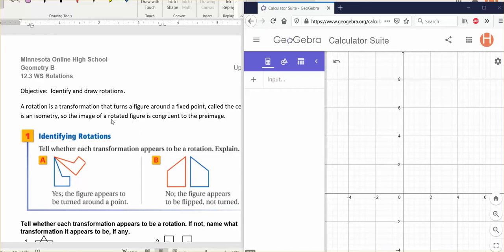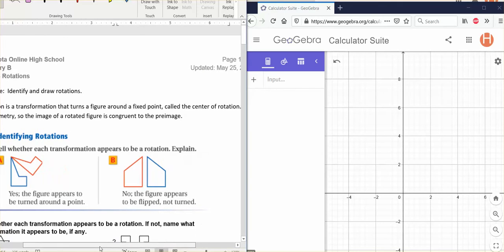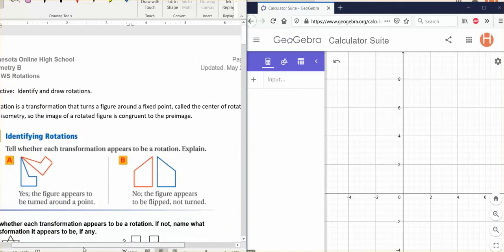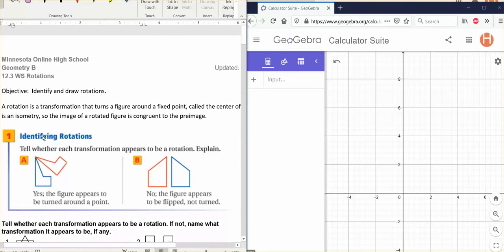So a rotation is a transformation that turns a figure around a fixed point, which is called the center of rotation. And a rotation is an isometry. That means that the image of the rotated figure is congruent to the pre-image.